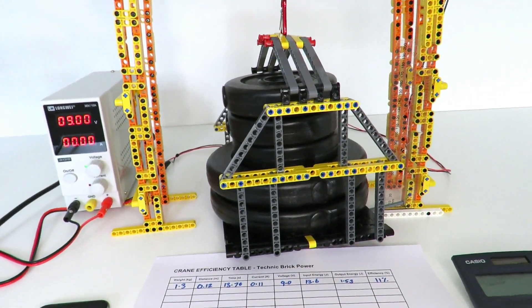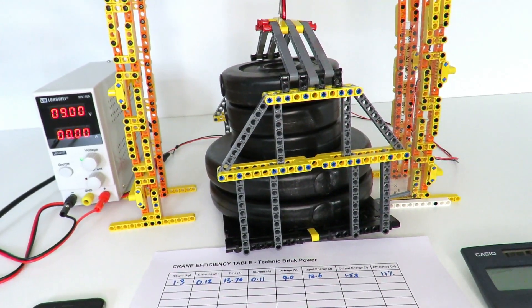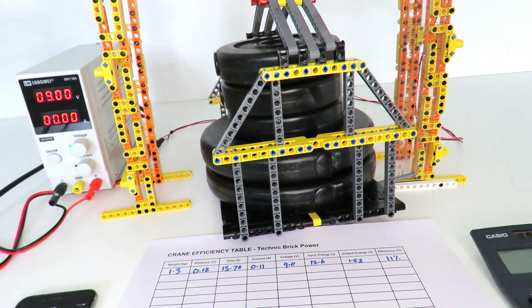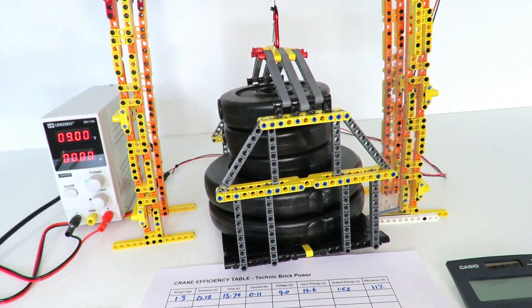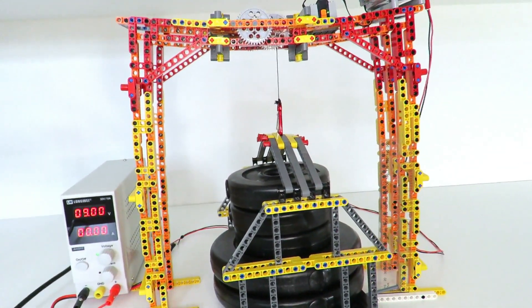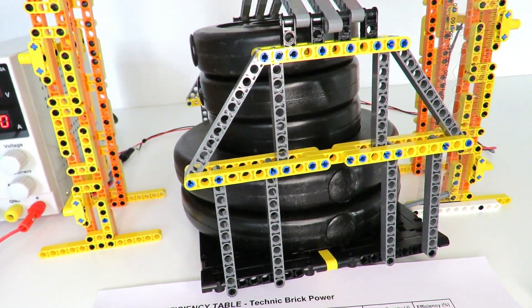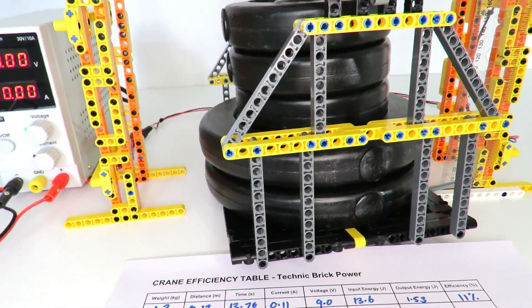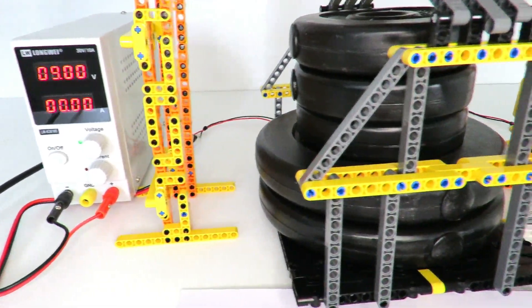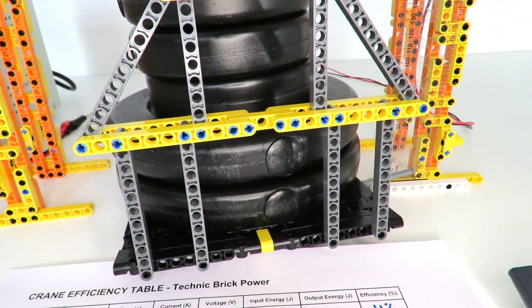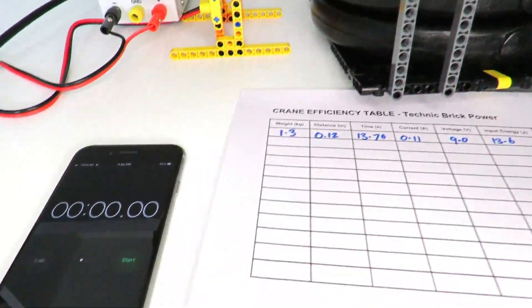Now I was kind of surprised that the efficiency was just 11% when lifting 1.3 kilograms, so I was wondering if the efficiency would change with the amount of weight that we're lifting. So in this example here, I've loaded up the crane with eight kilograms, that's a total of 8.3, and yeah, let's see how that measures up. So again, we'll start the timer.